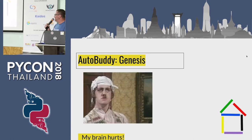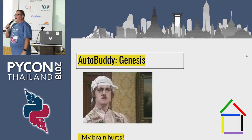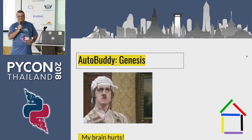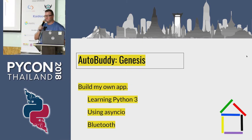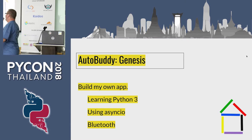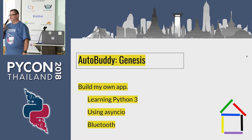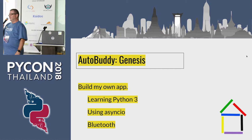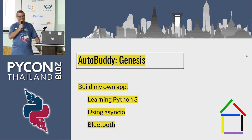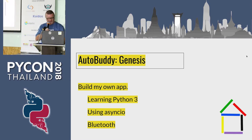So I started thinking and decided to build my own system. There were a few reasons: I wanted to learn Python 3 — I had been using Python 2.7 — and I also wanted to learn AsyncIO and explore Bluetooth. I thought that could be interesting.